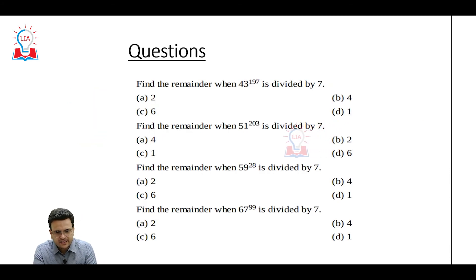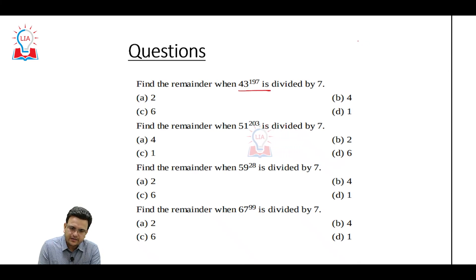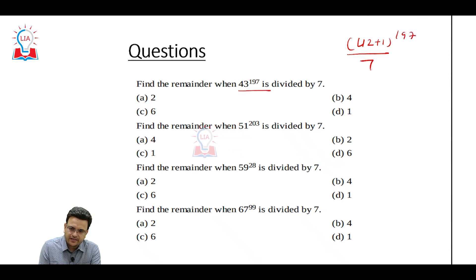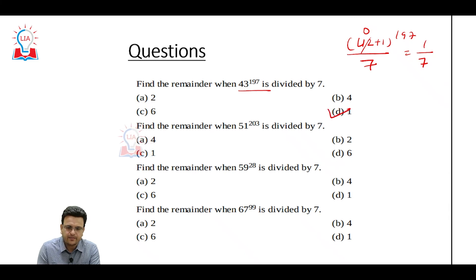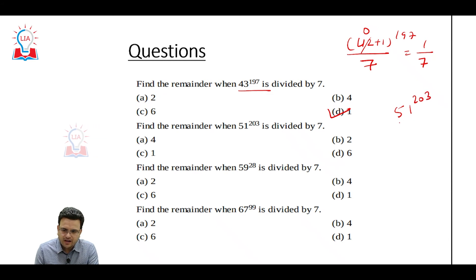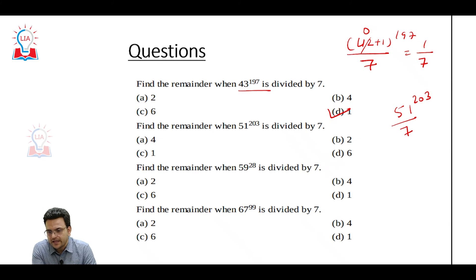Let's see some simple questions. First question: 43 to the power 197 divided by 7. We can write (42 + 1) to the power 197 divided by 7. 42 divided by 7 gives remainder 0, so it becomes 1 to the power 197, which equals 1. The answer is 1.